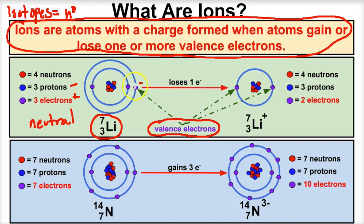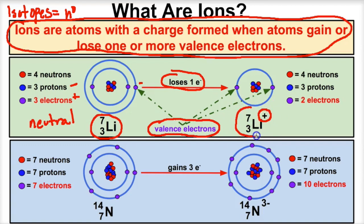If this lithium atom loses its only valence electron — if that electron goes bye-bye — what happens to the overall charge? When atoms lose electrons, they become more positive. So if lithium loses one negative particle, it becomes positive one, or just simply a plus charge. We don't need to write the one; just simply plus. What we end up with is a lithium ion.